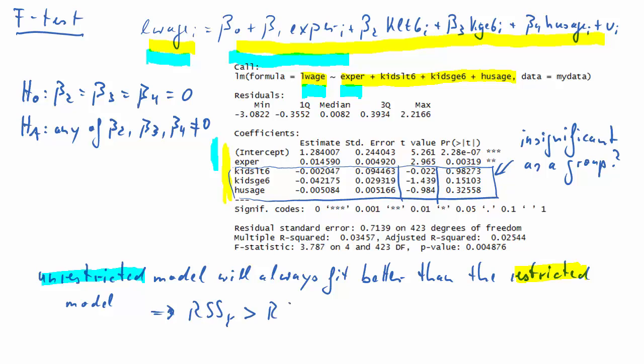Formally, we say that residual sum of squares restricted are larger than residual sum of squares unrestricted, or that the difference between the two is always going to be larger than 0. That is very important to understand.